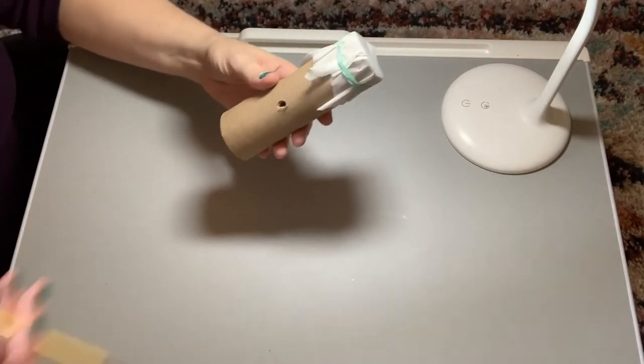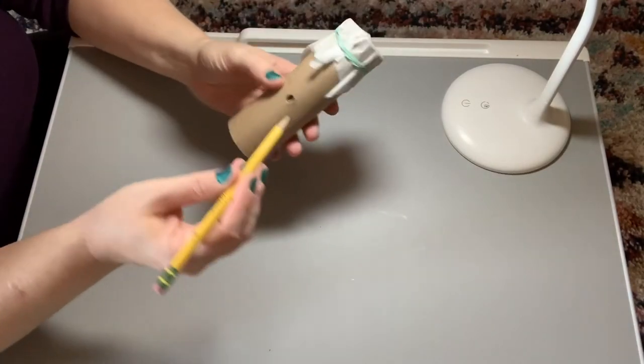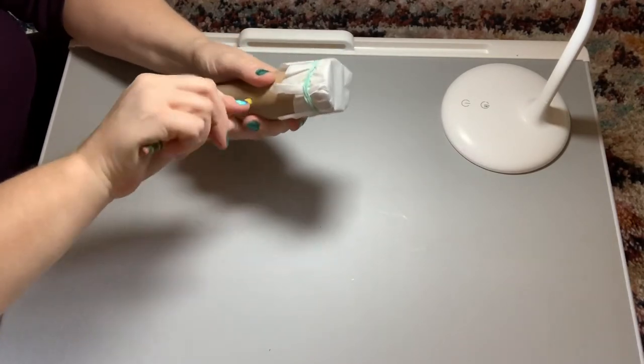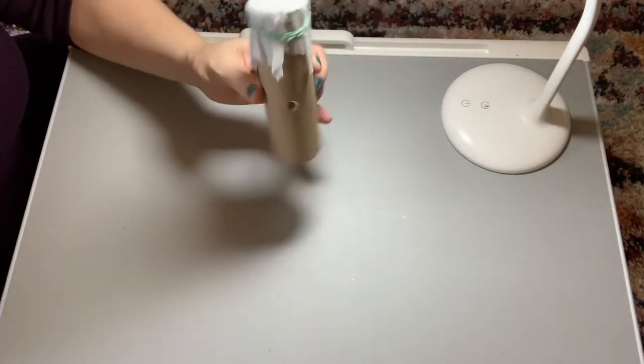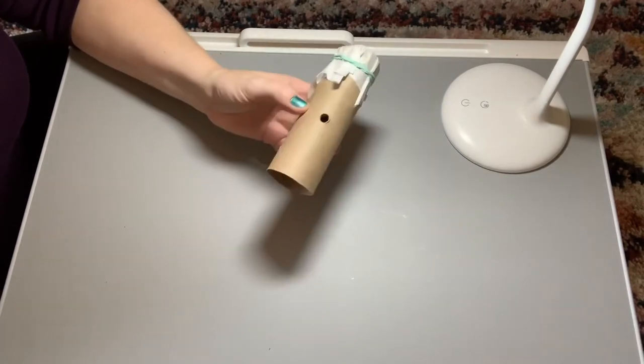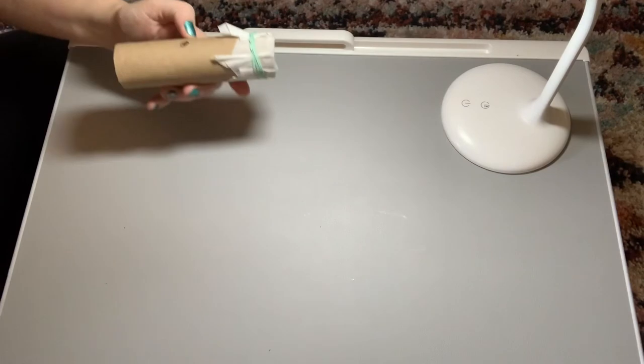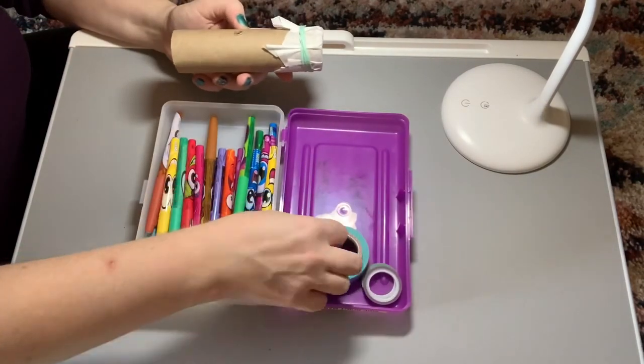And then I just used a pencil to kind of smooth out or open the hole nice and round. And that's really it at that point. You can decorate with markers, with tape, with paint. You can decorate your kazoo any way you like.